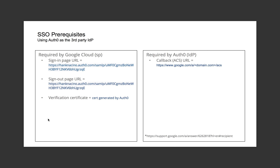Taking this one step further in our example — using Auth0 as my third-party identity provider and Google Cloud as my service provider — my sign-in page URL is generated on the Auth0 side and configured on the Google Cloud service provider side. I get the sign-out page URL from Auth0 and configure that in Google Cloud, then generate a certificate on the identity provider side, download it, and configure it on the Google Cloud side. On the opposite side, I configure the callback or ACS URL on the Auth0 side, and that URL exists on the Google Cloud side.